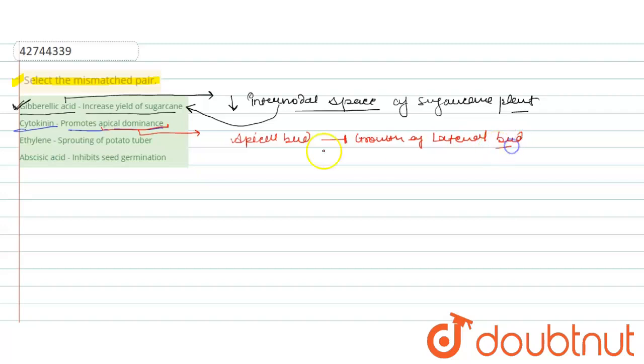And this auxin will inhibit the growth of lateral buds. So this is called apical dominance, and for this function, the auxin hormones are responsible.